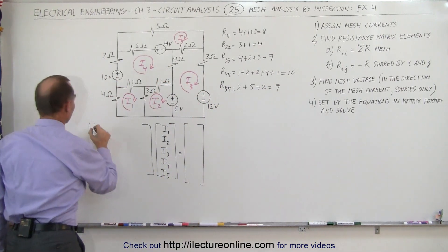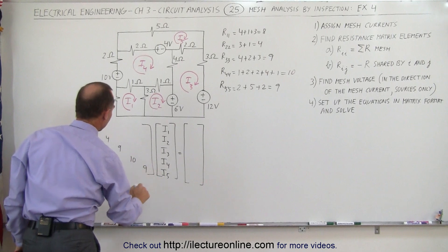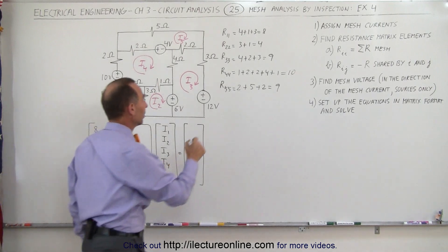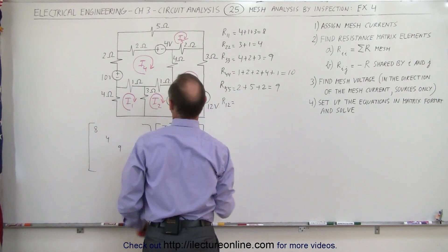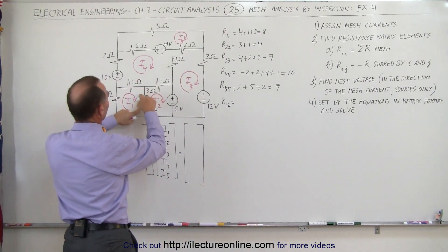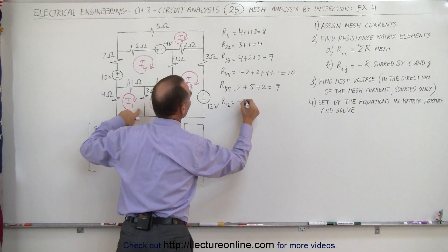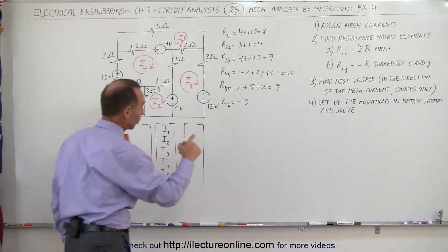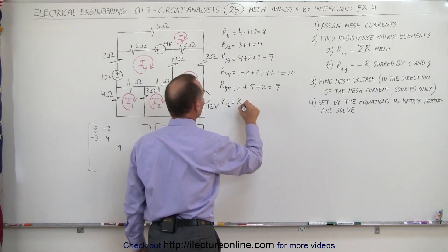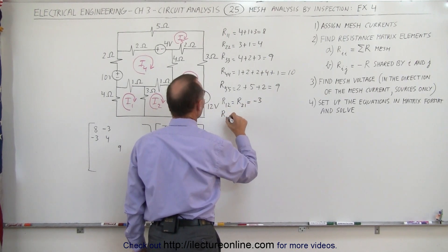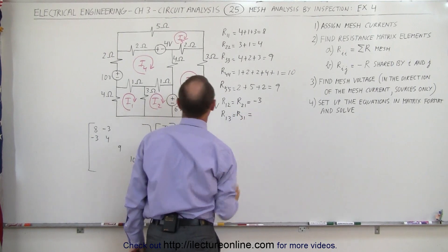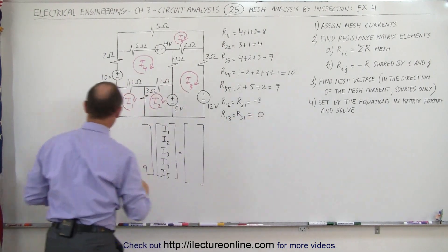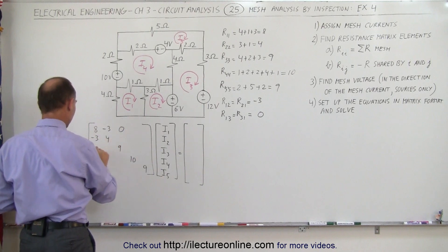So now we have the five diagonal elements: 8, 4, 9, 10, and 9. Now we have to find all the off-diagonal elements, but they all come in pairs. Whatever we find on one side, we'll have the same on the other side. We need to find R12. So we have meshes 1 and 2, and they share a 3 ohm resistor between them. That is therefore equal to minus 3. Always put a negative in front of that. So R12 equals R21 equals minus 3. How about R13, which equals R31? Between 1 and 3, notice there's nothing being shared, that's equal to 0.